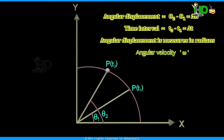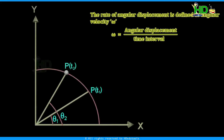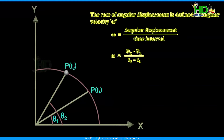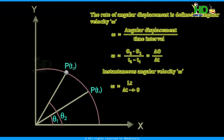Angular velocity is denoted by omega. The rate of change of angular displacement is defined as angular velocity. Angular velocity is given by angular displacement divided by the time interval — that is, omega equals theta2 minus theta1 divided by t2 minus t1, or delta theta by delta t. The instantaneous angular velocity is defined as the limit of this ratio as delta t approaches 0: omega equals limit as delta t tends to 0 of delta theta by delta t.